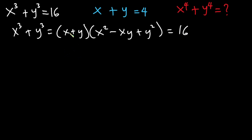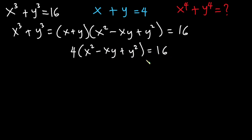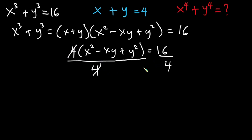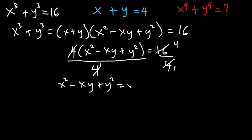We have been given x plus y which is 4, so we have 4 into x squared minus xy plus y squared is equal to 16. Now we can divide each side by 4 — this 4 will cancel, and 4 goes into 16 four times — so we have x squared minus xy plus y squared is equal to 4.